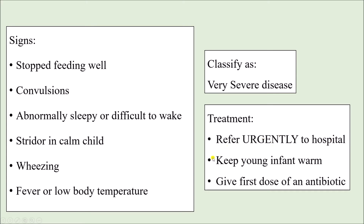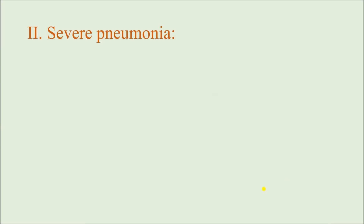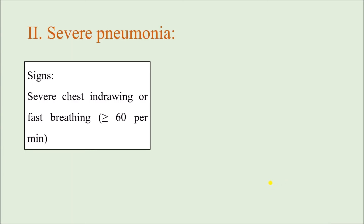Treatment for Very Severe Disease includes: urgent referral to the hospital, keeping the young infant warm if there is a possibility of hypothermia, and giving the first dose of antibiotic — sometimes orally from the primary health center or sub-center before referral, where injectable antibiotics will be given. For Severe Pneumonia, signs include severe chest indrawing or fast breathing — either of these can be present and the case will be classified as Severe Pneumonia.